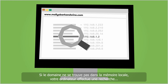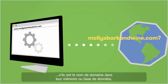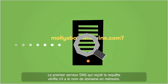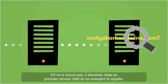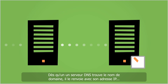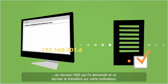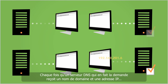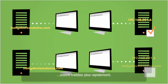If the domain isn't found in local memory, your computer takes the search out to the Internet where it queries a series of DNS servers to see if they have the domain name in their memory or a database. The first DNS server that receives the query checks its memory for the domain name. If it doesn't find it, it sends the query on to the next DNS server. As soon as the domain name is found, that server returns the domain name and its IP address back down the line until it arrives at your computer. Each DNS server along the way stores the information in its memory so future requests can be answered more quickly.